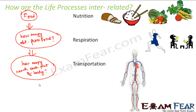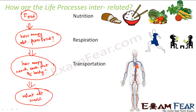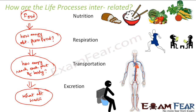Now the energy and all the nutrients have reached each and every corner of the body. But what about the wastes? When food gets digested and converted into simpler substances, during those chemical reactions a lot of waste materials or harmful substances are also produced. We cannot keep accumulating wastes inside our body, so those waste products and useless byproducts formed during energy generation need to be removed. The process of removal of such waste products is known as excretion. So now you understand how nutrition, respiration, transportation, and excretion are related to each other.